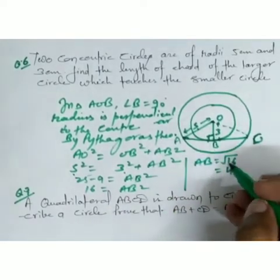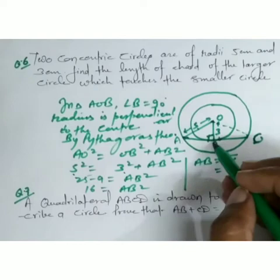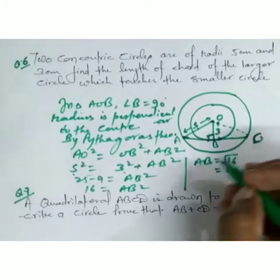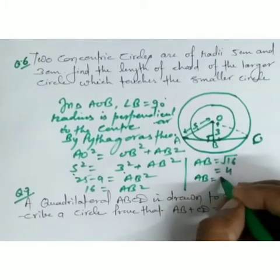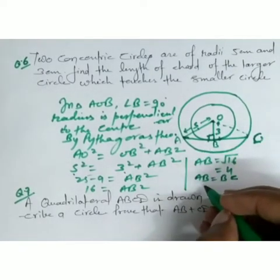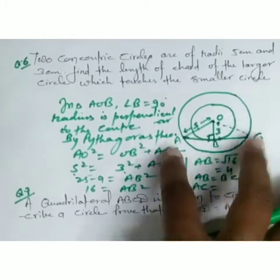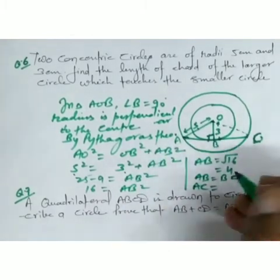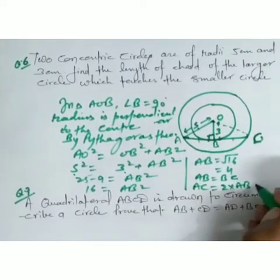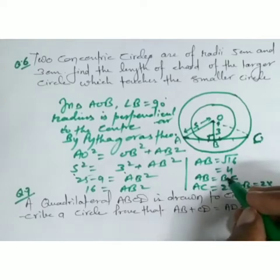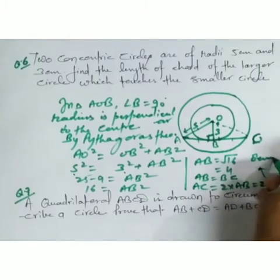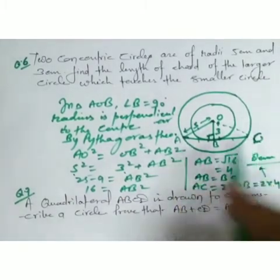AB equals 4 cm. Since we know that the perpendicular from the center bisects the chord, AB equals BC. Therefore AC equals double of AB. AB is 4, so AC equals 8 centimeters. This is the length of chord AC.